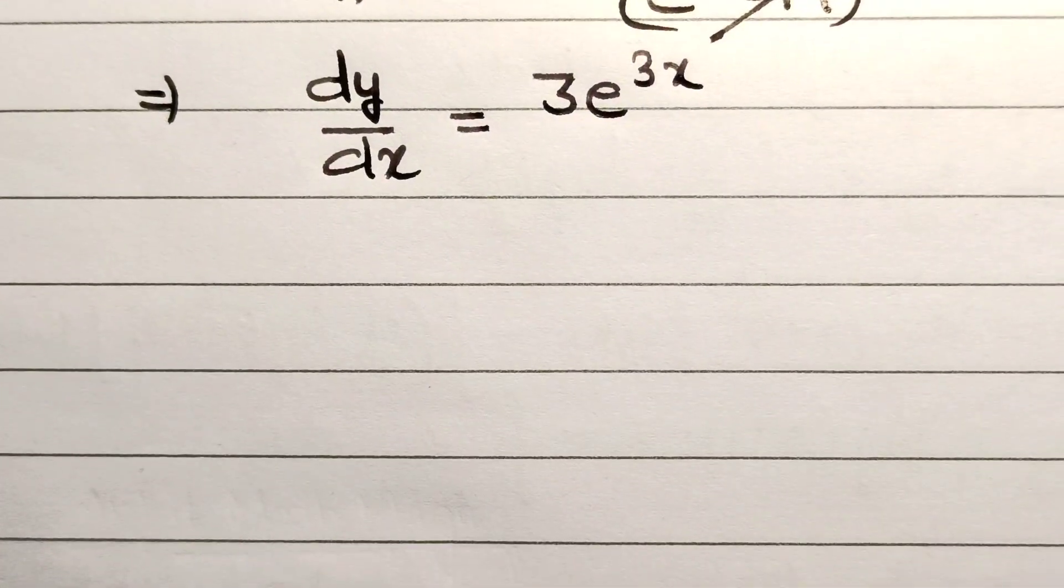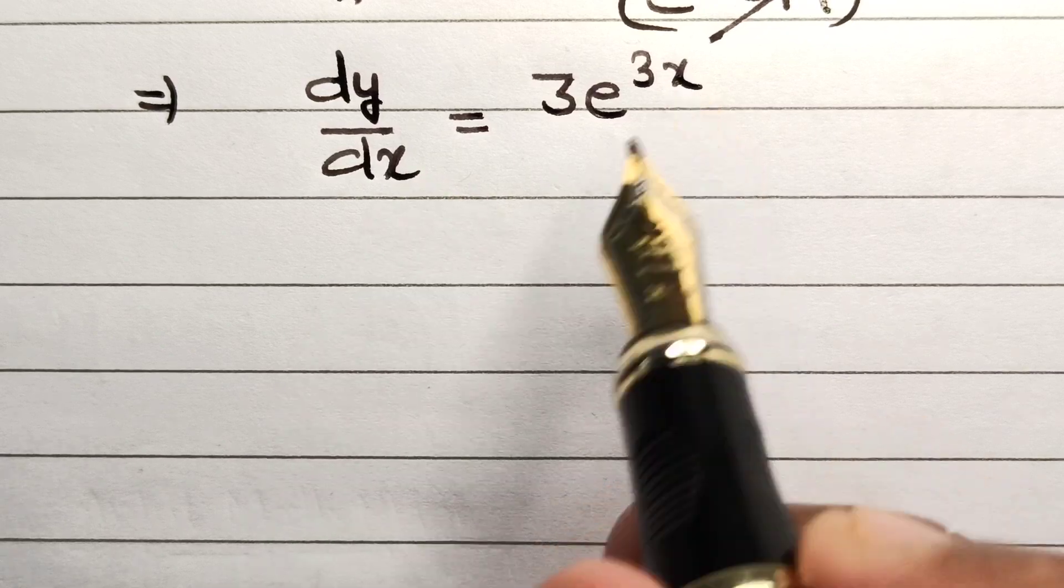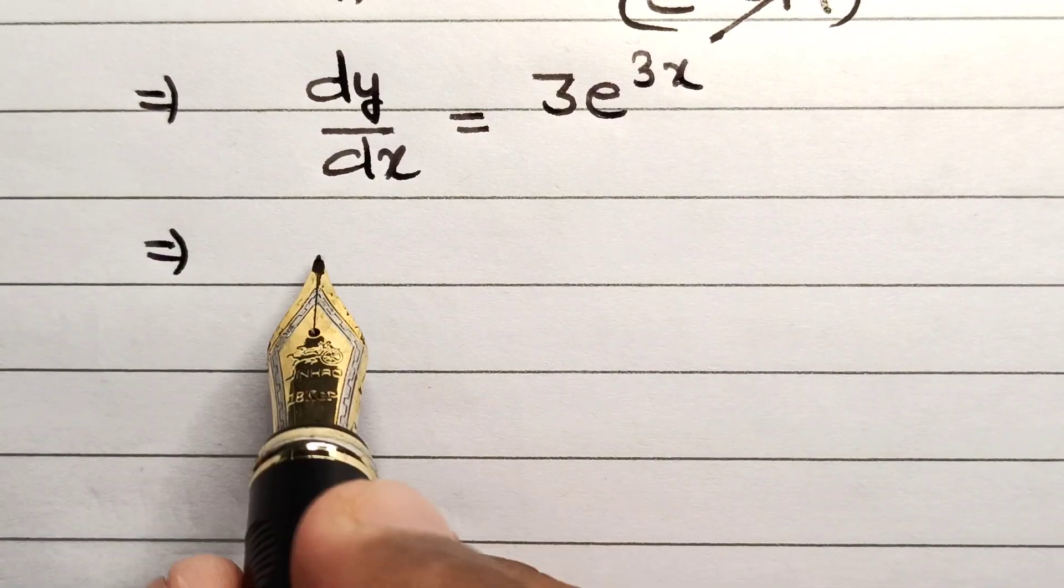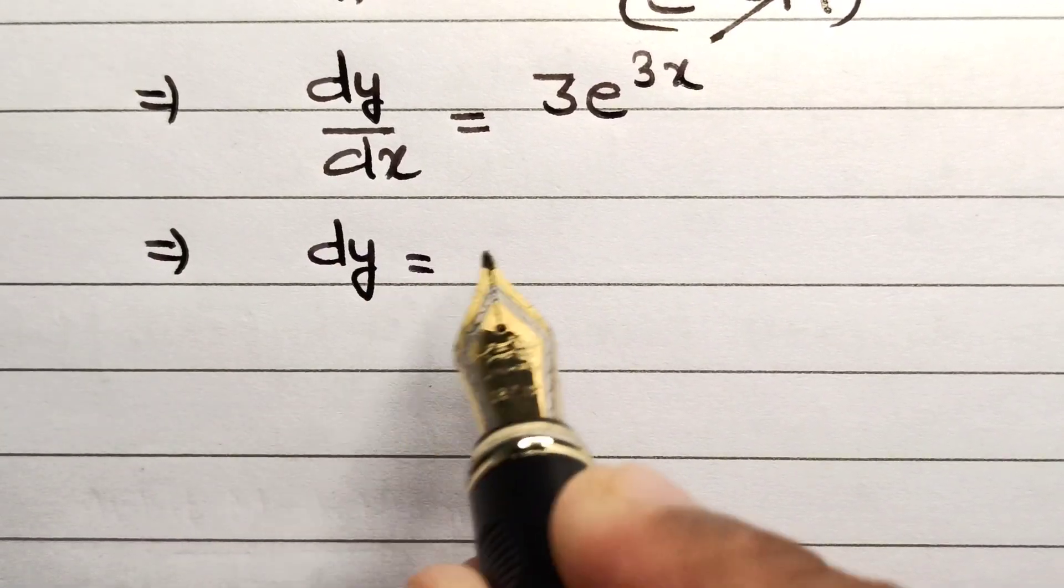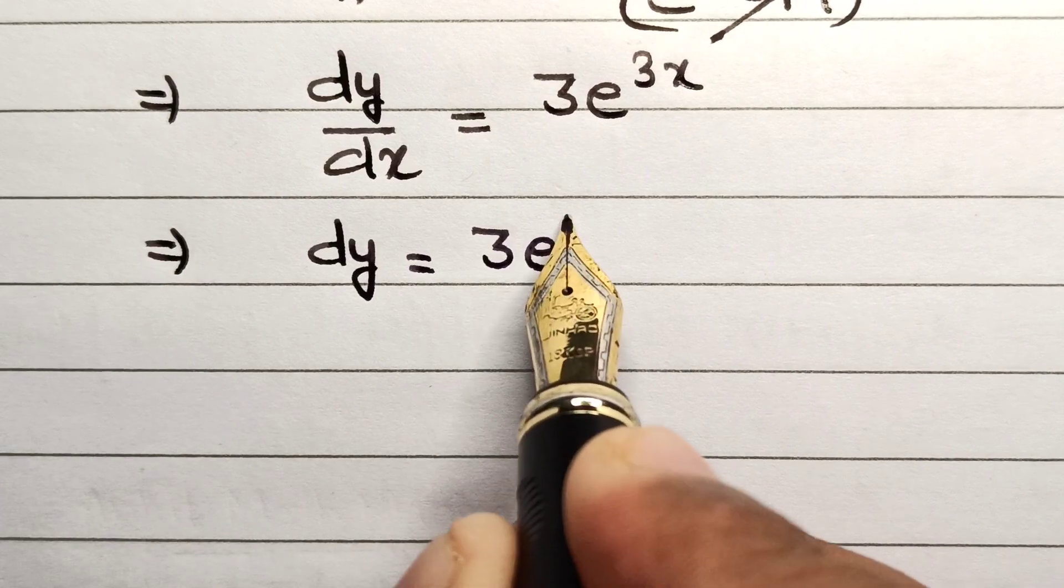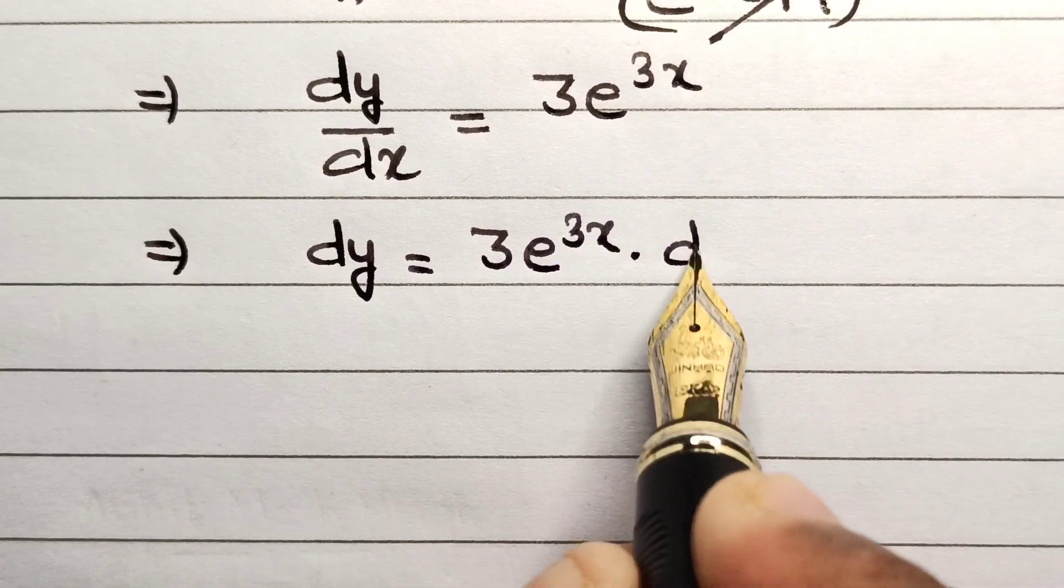To calculate the value of y, the next task is to shift dx to the right-hand side. So dy equals 3e^(3x) multiplied by dx.